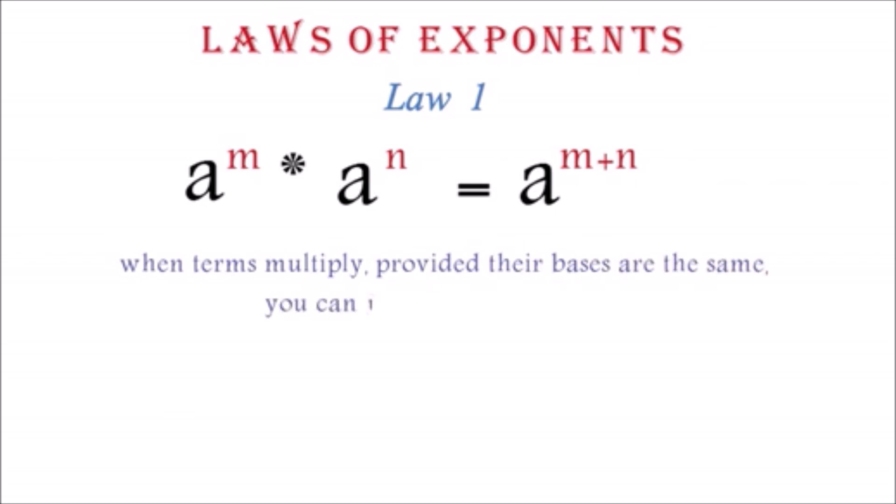Law 1: The first law states that a exponent m times a exponent n equals a exponent m plus n. The first law is saying that when terms multiply, provided their bases are the same, you can just add the exponents.